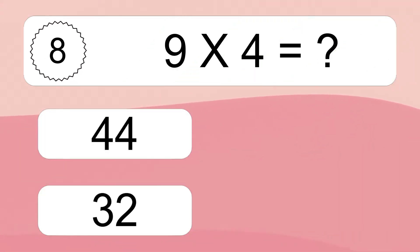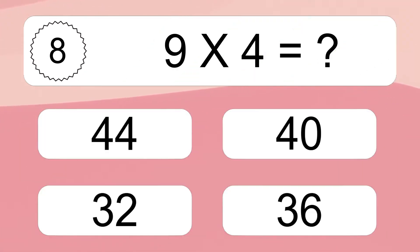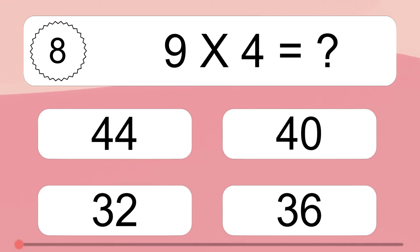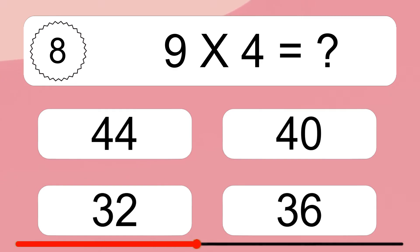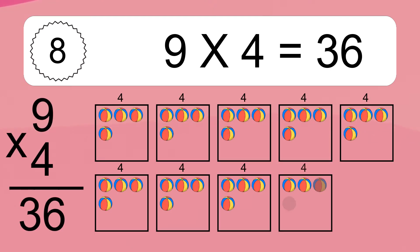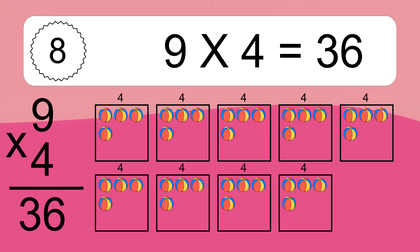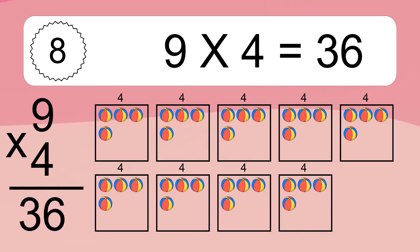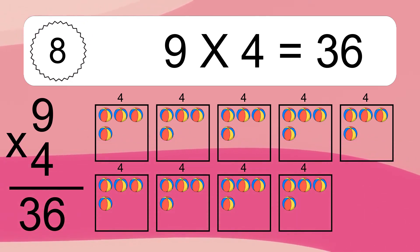9 times 4 equals what? 9 times 4 equals 36. We have 9 boxes, and each box has 4 colorful balls inside. If you count all the balls in all the boxes together, you will have 9 times 4 balls. This equals 36 balls.